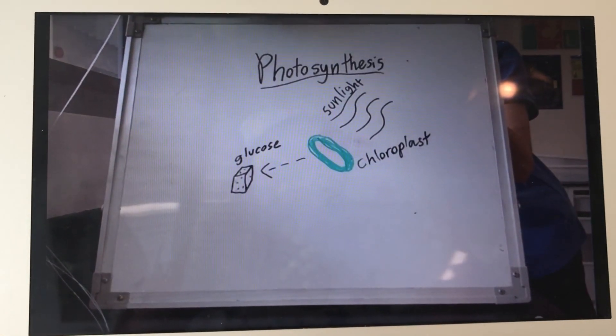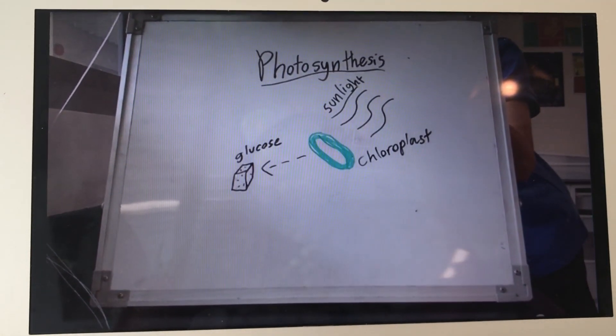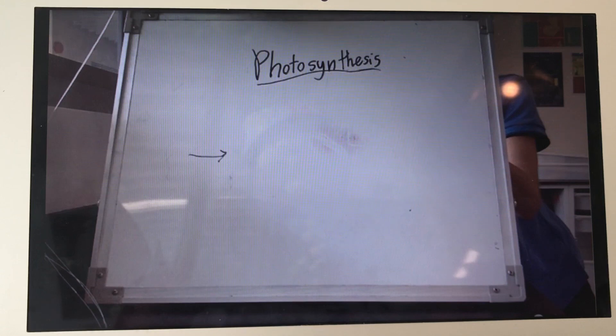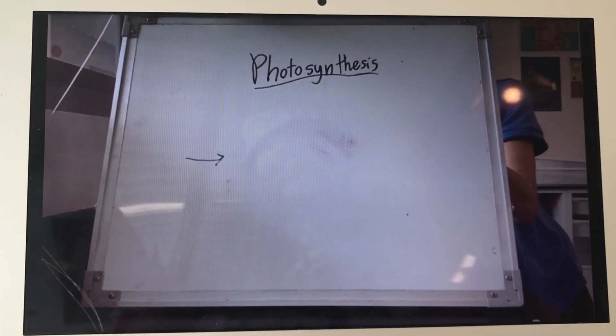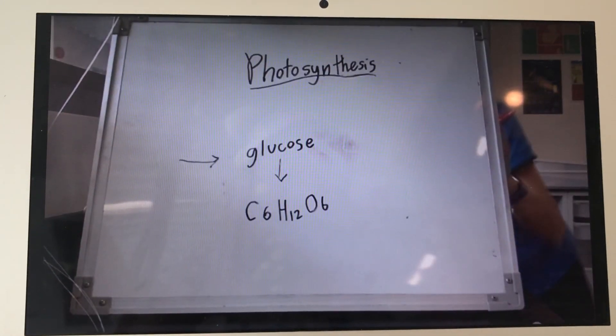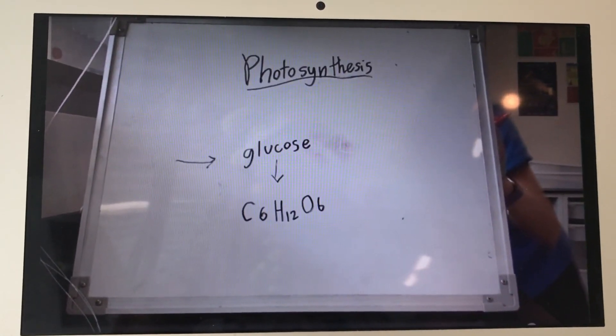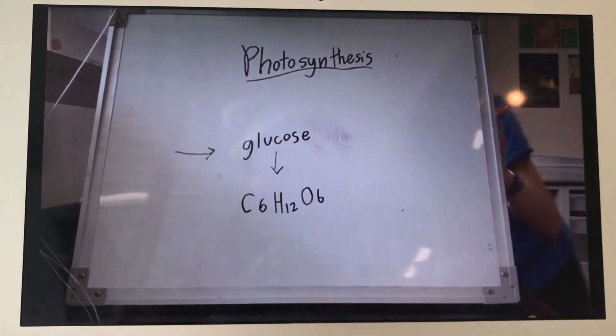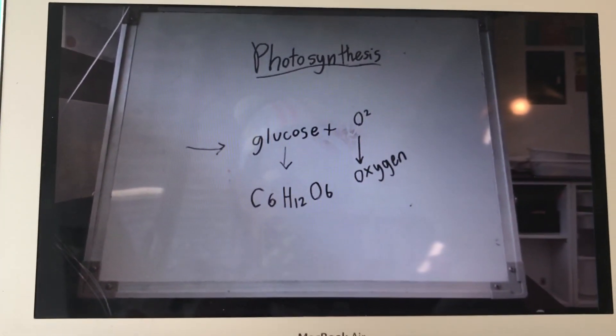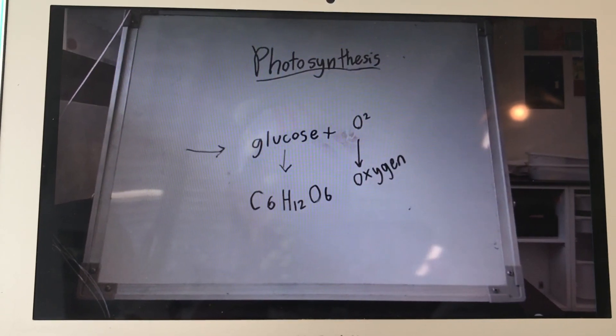The chloroplast absorbs the energy from the sunlight and transforms it into glucose, or food. The byproducts of photosynthesis is glucose, which can be written in a formula as C6H12O6. Another byproduct is oxygen, which is very important to us.